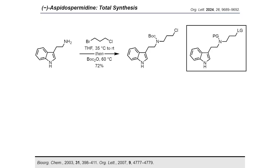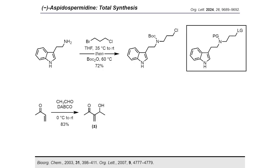The synthesis commenced with the preparation of the substrates for the allylic substitution reaction. Tryptamine was sequentially N-alkylated and N-protected at the primary amine to furnish the desired indole derivative in 72% yield in a modified one-pot procedure. The simplest allylic substrate precursor, with a hydroxy group at the leaving group position, was obtained from a Morita-Baylis-Hillman reaction between methyl vinyl ketone and acetaldehyde to give the allylic alcohol in 83% yield.